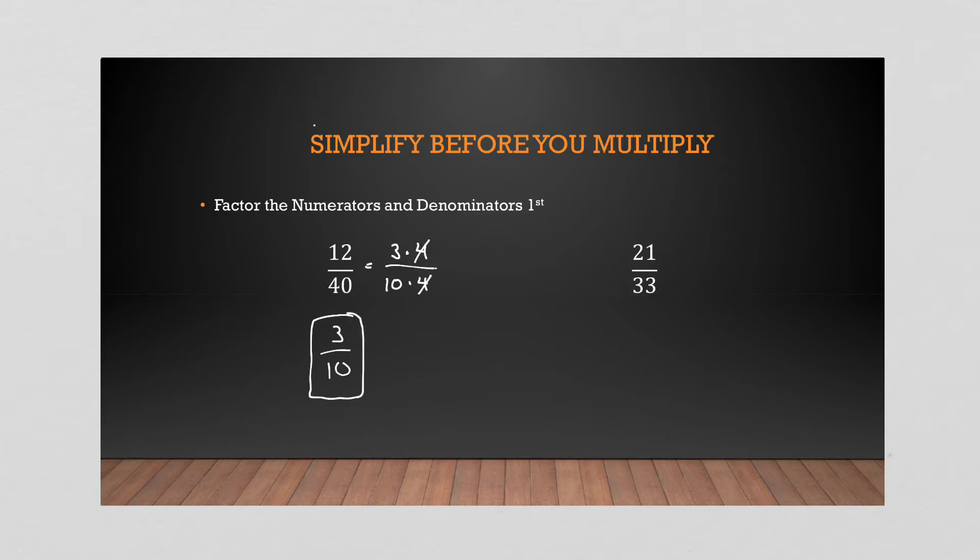So you can do it one piece at a time or you can break these things down as far as you want. 21 I know is three times seven and 33 is three times 11. Any repeating double digit, 11, 22, 33, 44, it's that number times 11. So here I am and now I cancel three with three and I'm left with seven over 11. So you can see that by identifying what the number is made up of, it's easier to cancel.